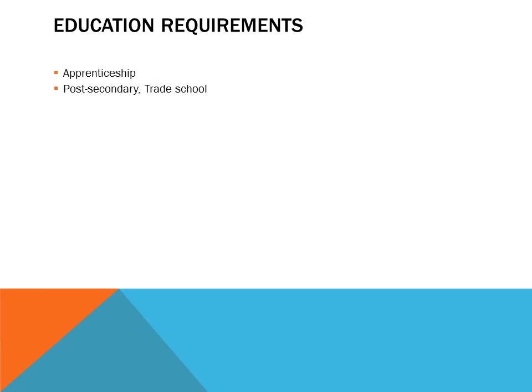Education requirements include apprenticeship and post-secondary or trade school. An apprenticeship is usually something done through a union or other organization, where you will go to work for a company for a number of years and at the same time receive in-class instruction. Apprenticeships are hard to come by, but when you get an opportunity to get one, it's definitely worthwhile going through the program.